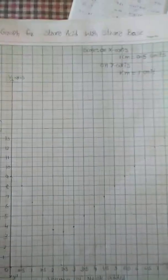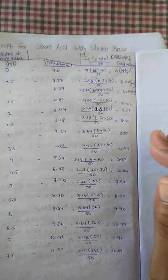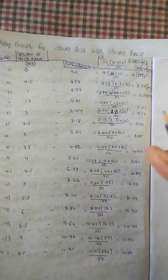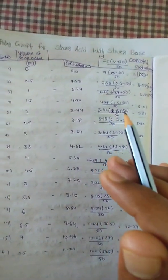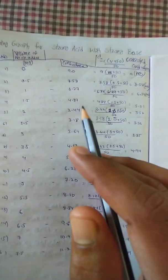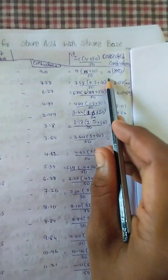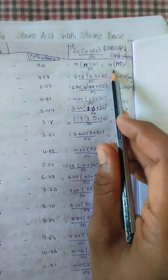Now, we have to plot the corrected conductance values with respect to the sodium hydroxide added on the graph. For 0 ml of sodium hydroxide, the obtained corrected conductance is 9 mS.